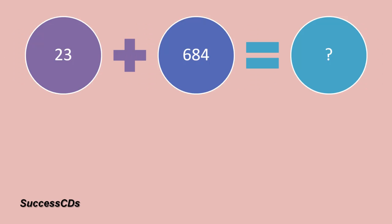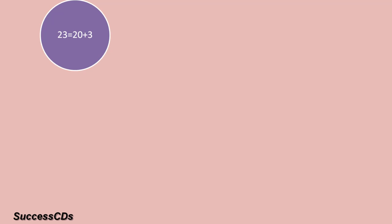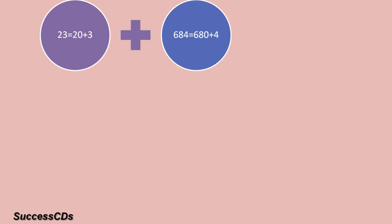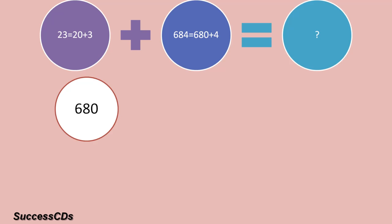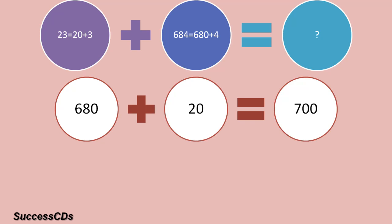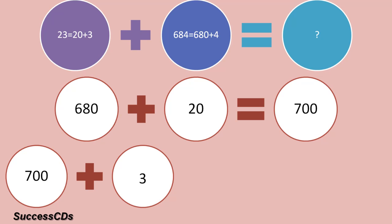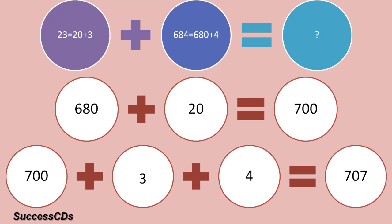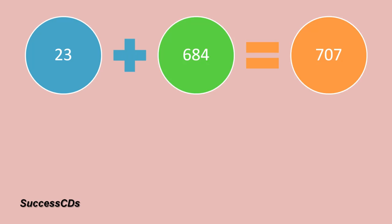Another example is 23 plus 684. You have to find this sum. Again we will round off. We can write 23 as 20 plus 3, and 684 as 680 plus 4. First of all, we will add up 680 and 20 — we get 700. Now keep 700 in your mind, and see what you had added from the numbers to round them off. You had added 3 and 4, so to 700 you will add 3 and 4. You get the answer as 707.